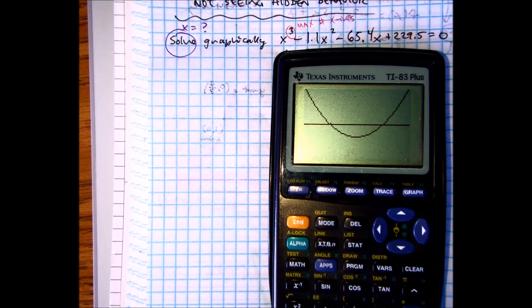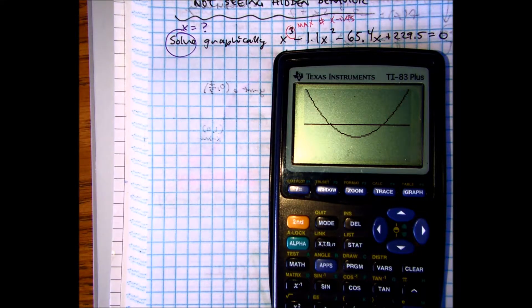What we did there is we zoomed in on the bottom right of the graph. Now we thought it was only touching the x-axis once. It's actually touching the x-axis how many times? Twice.